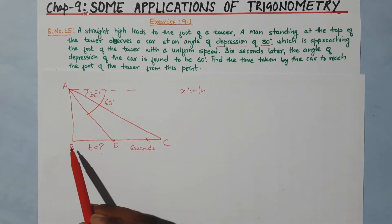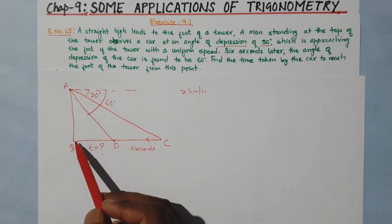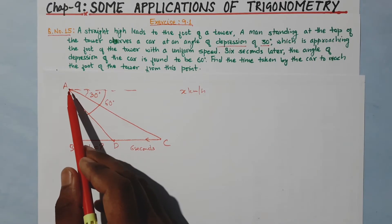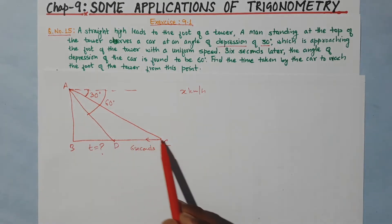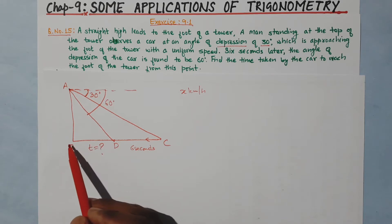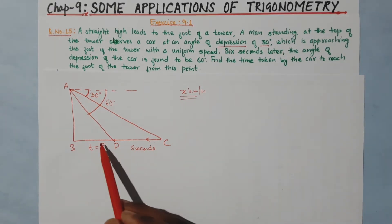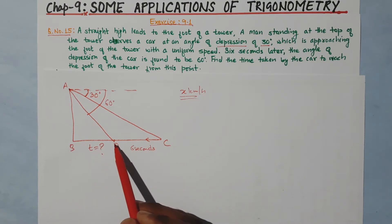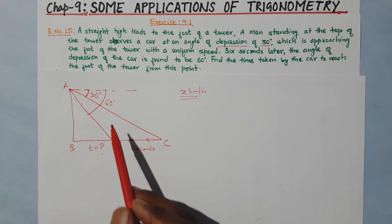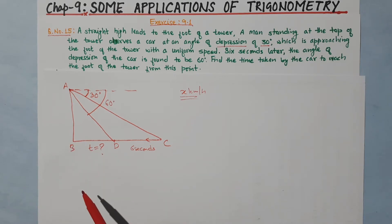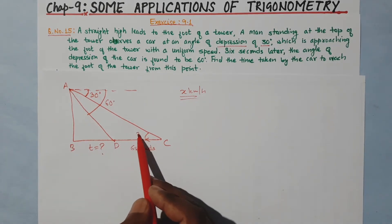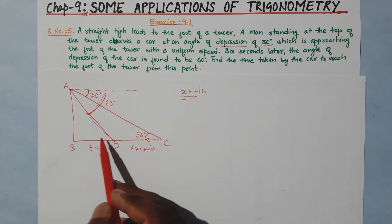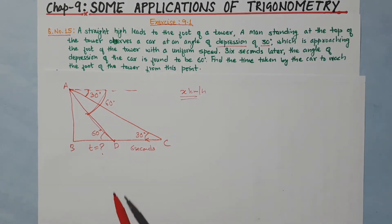Let's redraw the figure according to the question. AB is the tower. A man is standing at the top of the tower. He first observes the car at position C, with an angle of depression of 30 degrees. The car is moving at uniform speed. After 6 seconds, the car reaches position D, and then the angle of depression is 60 degrees. This figure is now complete.